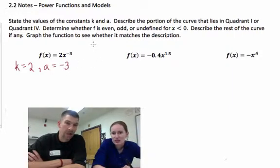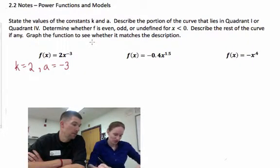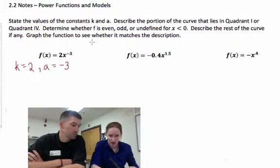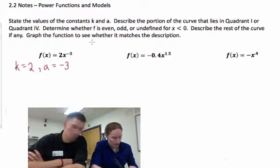k is our thing that's in front of our x and a is our power. Right, negative 3. Now, describe the portion of the curve that lies in quadrant 1 or quadrant 4. Well, that has to do with the previous slide where we talked about those properties.